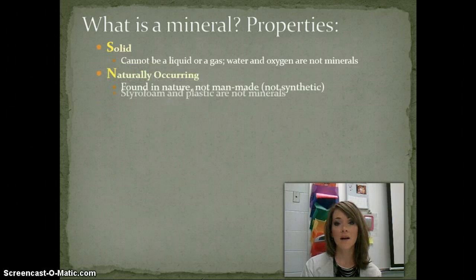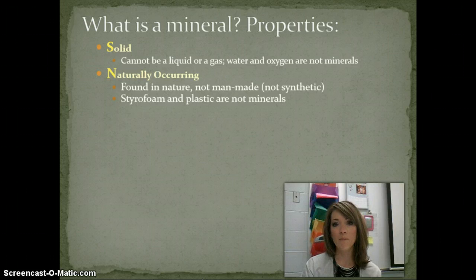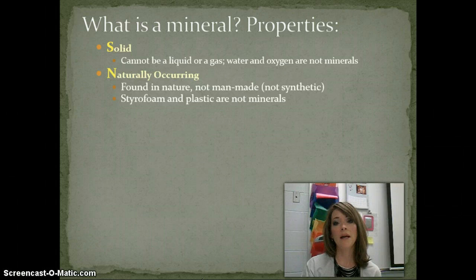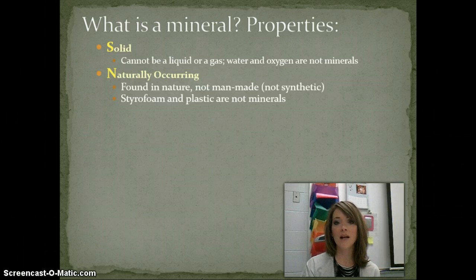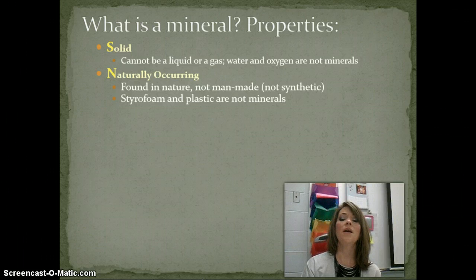The second characteristic, being naturally occurring, means that it cannot be man-made. It has to be formed by the earth, formed by nature. Another word for man-made is synthetic, so it can't be any kind of synthetic product. Styrofoam and plastic would be examples of things that would not be minerals because they don't meet that characteristic.